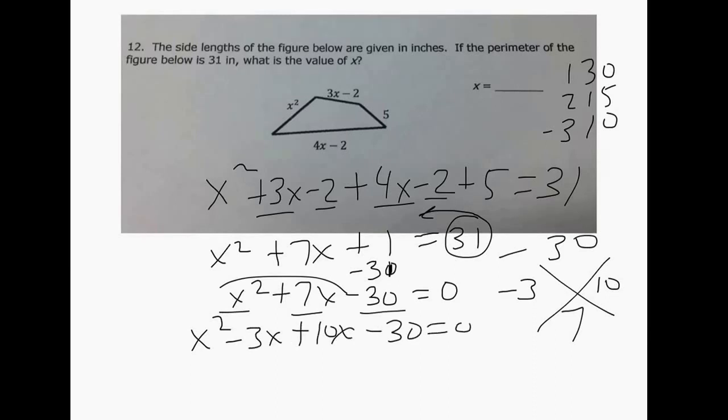So our 4 parts are x² - 3x + 10x - 30 and we group. Pull out the x so that's x - 3, that's also going to be x - 3, we pull out a 10. So that is x - 3, x + 10.